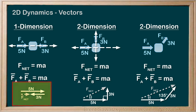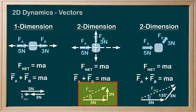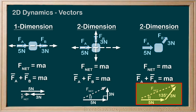For a 1D problem, the vector directions are fairly simple to deal with using positives and negatives: if right is positive, then every force pointing to the right is considered positive, and any force pointing left is negative. In 2D problems, we can no longer stick to positives and negatives, as we have another dimension involved. In 2D, if the vectors form a right triangle, we can use our trig ratios to solve for Fnet's magnitude and direction. If the vectors don't form a right triangle, then we resort to cosine law and sine law.